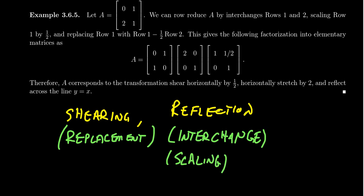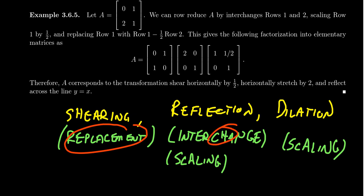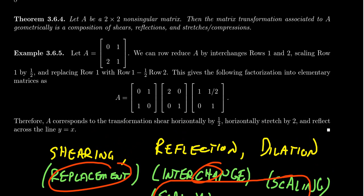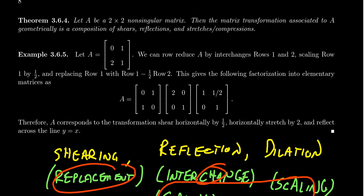And then the last transformation we've discussed so far would be dilation scaling of some kind, which as stretching and compressing corresponds naturally to elementary matrices of scaling type. And so you see all of them right here: replacements, interchange, and scaling. This shows us that the three elementary matrices correspond, multiplying by them, correspond to these three geometric types of transformations.